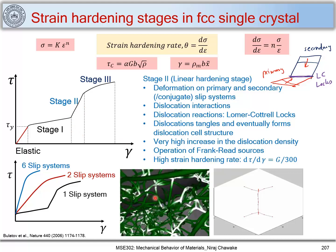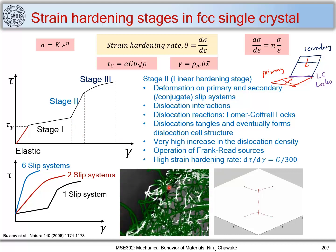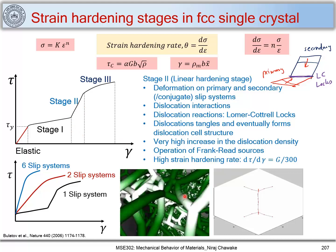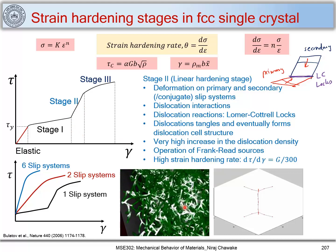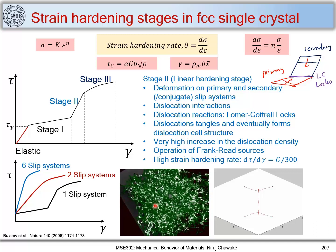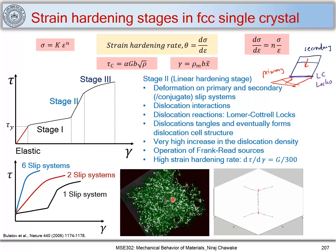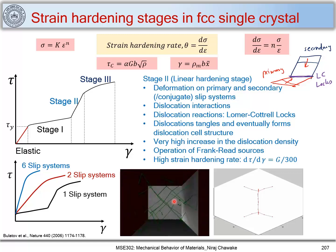In TEM images of stage two, we can see dislocations tangled, dislocations forming locks, and dislocations multiplying. In stage two we get a very high strain hardening rate of G/300.